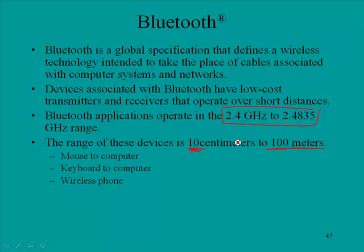There are actually three classes of Bluetooth devices, though the text doesn't get into it. Most devices are going to be up to 10 meters, or about 30 feet. Some of the applications for Bluetooth include a wireless mouse — you don't need the cable connecting your mouse to the computer; it connects wirelessly. One of the values of Bluetooth is that it transmits over such a short range that it doesn't interfere with other systems.